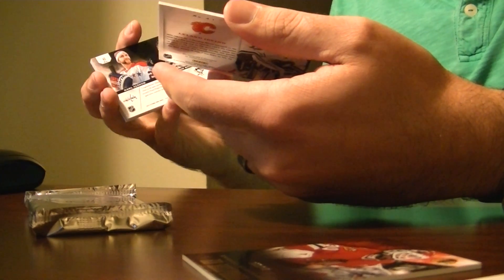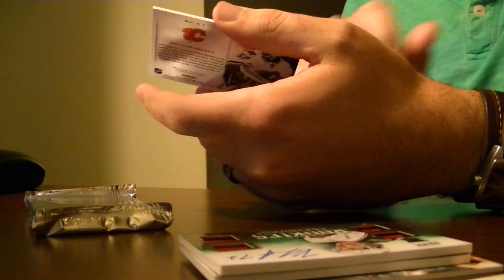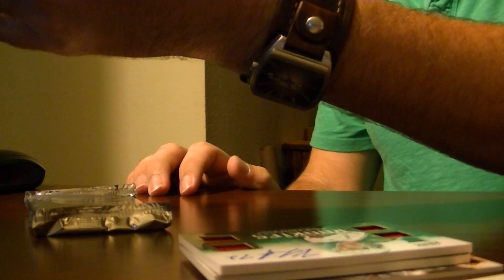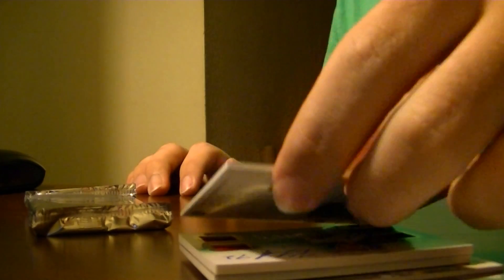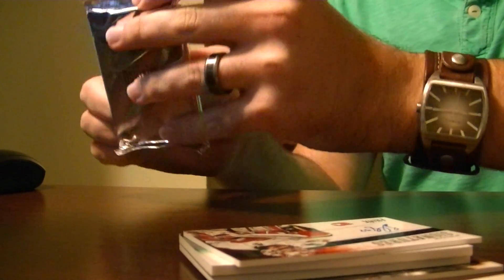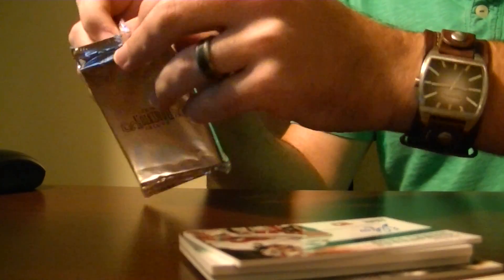And Leland Irving, the $99 Prime Signatures. Alright, Dominion time. Man, that Robitaille is so nice looking. Three of three.